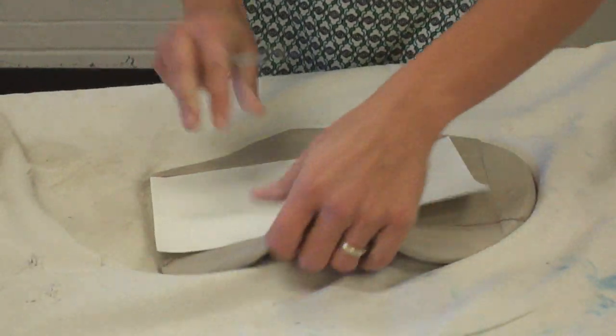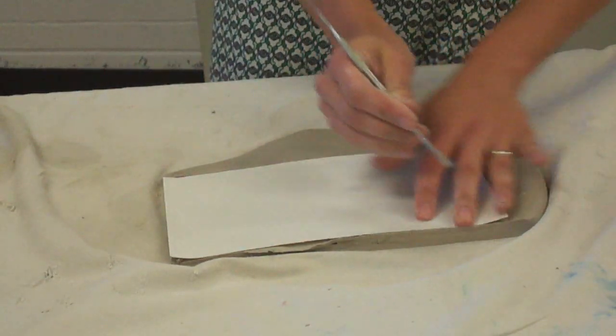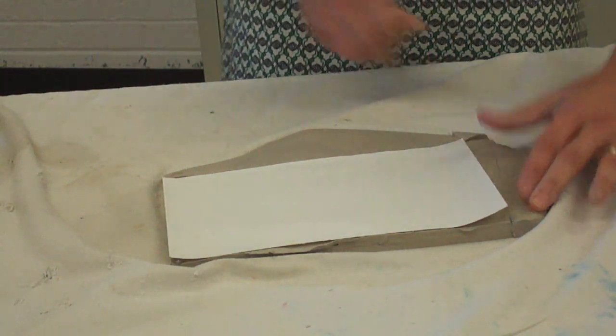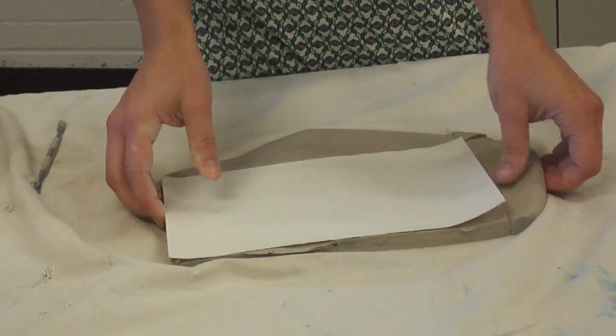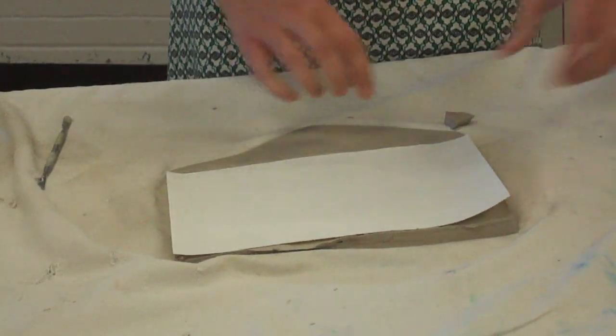This is all my excess clay. We're going to use that a little bit later. Take this and cut down. Now what I have is a rectangle that should be 6 by 9, matching exactly what I had on my paper template.